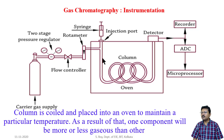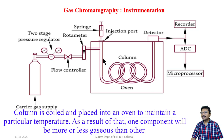According to that temperature, the different components will have different degrees of gaseous formation. The component which is most gaseous will have higher speed while travelling through the column. The component which is less gaseous will take more time to traverse through the column.